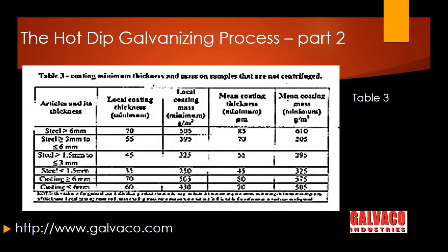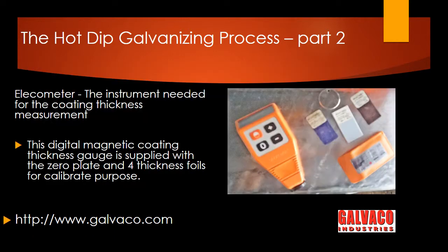Table 3 states the coating minimum thickness on samples that are not centrifuged. This standard requires a local coating thickness for steel above 6 mm to be above 70 microns, or the mean coating thickness should be 85 microns. For steel between 3 mm and 6 mm thickness, the local coating thickness must be 55 microns or more, or the mean reading must be above 70 microns, and so on.